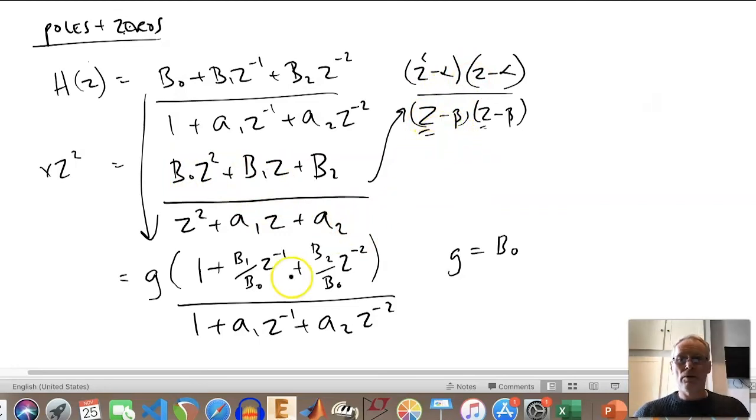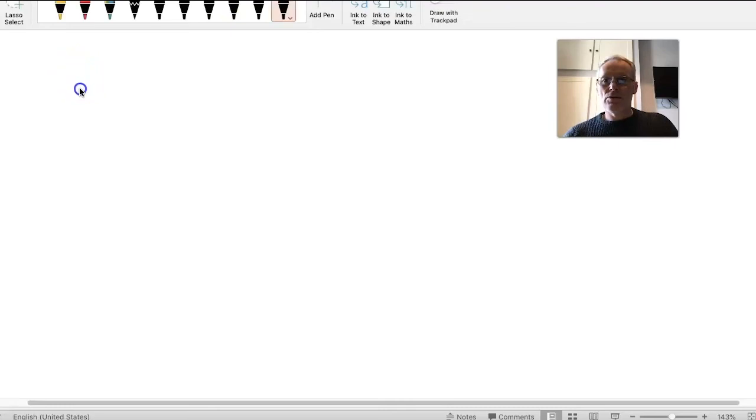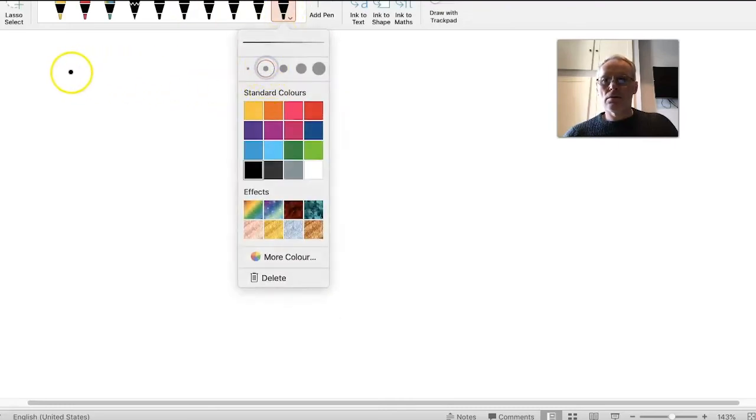So we can then use the same process where we multiply through by z² and find the roots using the previous method. If we were to express that, then you would also see there being a g term here. But essentially, all the g is doing is multiplying as a sort of gain factor. The whole response of the system is contained within these roots, so the locations of the zeros and the locations of the poles.